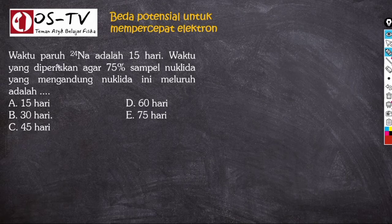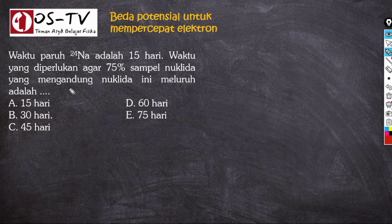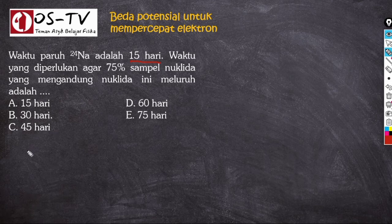Soal berikutnya: waktu paruh natrium-24 adalah 15 hari. Waktu yang diperlukan agar 75% sampel nuklida meluruh adalah berapa? Dari soal: T½ = 15 hari.